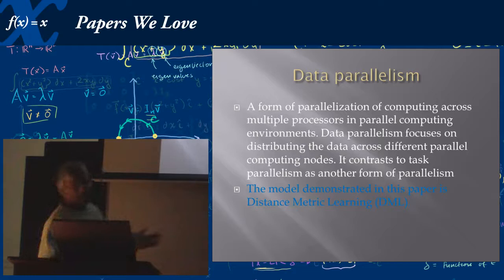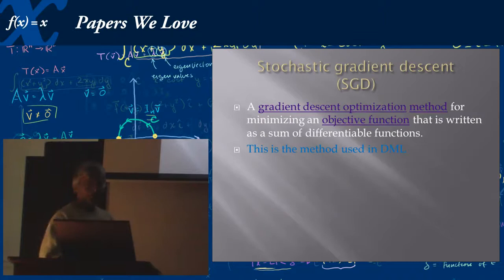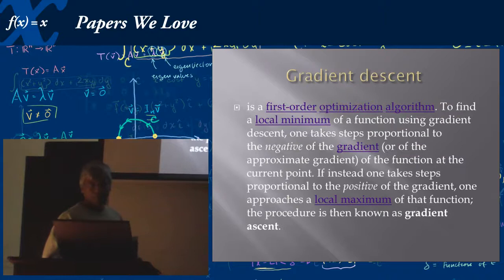So going back to definitions here: data parallelism. I've put there a formal definition of it, but essentially what data parallelism is, is that you are basically splitting the data and working on it in parallel. The model demonstrating this paper is distance-metric learning. Now this is, once again, a very formal algorithm that can be investigated and studied further. I'm going into the mathematics here: stochastic gradient descent. This is an optimization method. This is the method that's used in the distance metric learning algorithm.